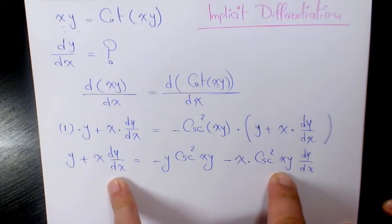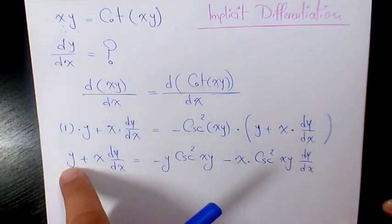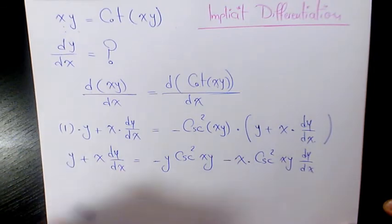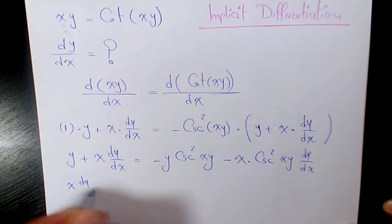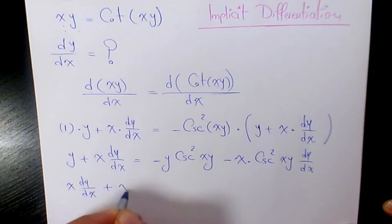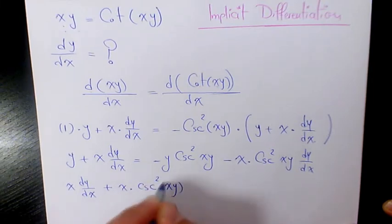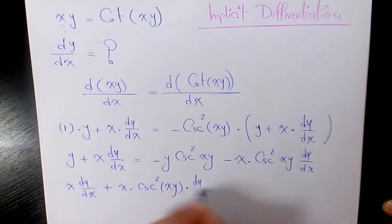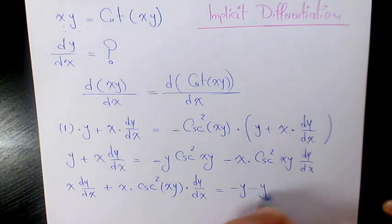So it's going to be x dy over dx plus x times cosecant squared xy times dy over dx equals negative y minus y cosecant squared xy.